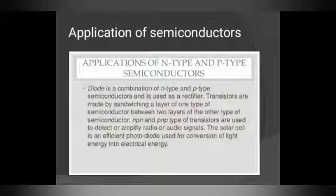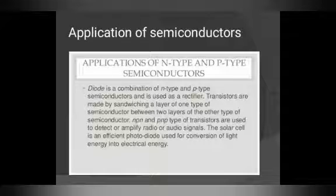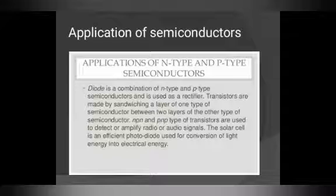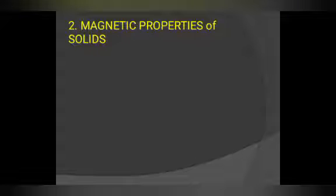Application of n-type and p-type: a diode is a combination of n-type and p-type semiconductor and is used as a rectifier. Transistors are made by sandwiching a layer of one type of semiconductor between two layers of another type — n-p-n or p-n-p. Transistors are used to detect or amplify radio and audio signals. A solar cell is an efficient photodiode used for conversion of light energy into electrical energy.